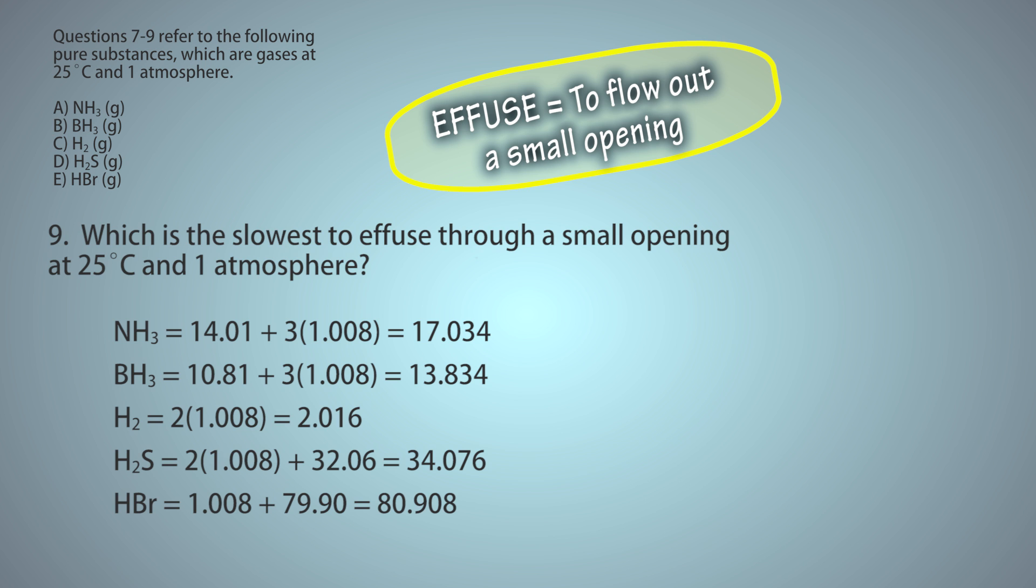HBr equals 1.008 plus 79.90 equals 80.908. HBr has the highest molecular weight, so it's going to effuse the slowest. The answer is E.